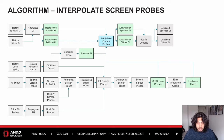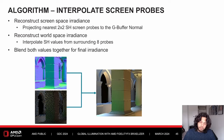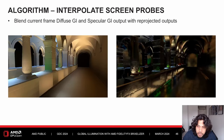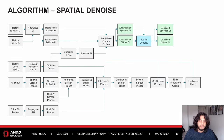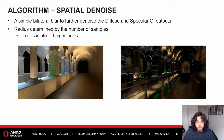In the interpolate screen probes pass, we reconstruct screen space irradiance by projecting the nearest 2×2 SH screen probes onto the G-buffer normal, and we reconstruct world space irradiance by interpolating the surrounding eight world probes. We blend them together to get our final irradiance value. In the same pass, we temporally accumulate the previously reprojected diffuse and specular GI outputs. We finish with a spatial denoise pass — a relatively simple bilateral blur to further denoise the GI outputs, with the blur radius determined by the number of samples.